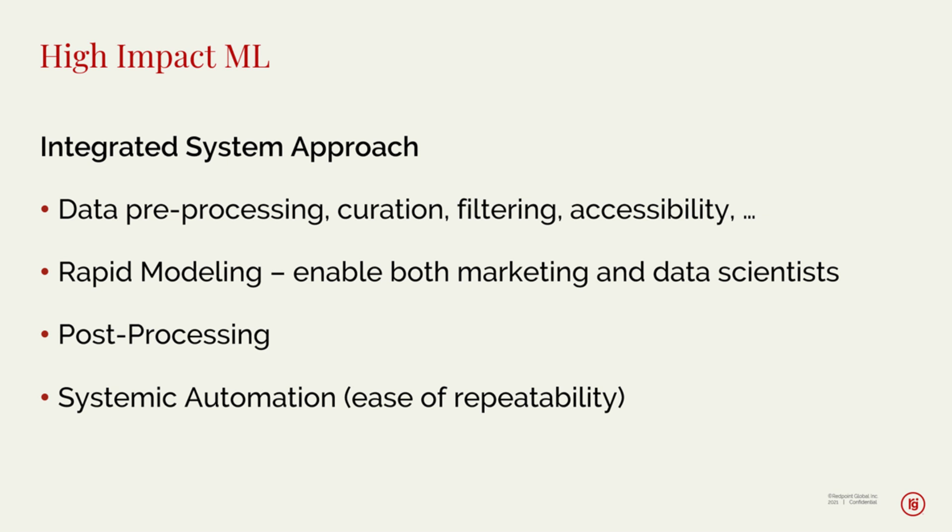We take an integrated system approach to machine learning. The first part is always data preprocessing — making sure data is available, getting rid of the noise, curation, joins — getting all your data ready for learning systems. You need to be able to rapidly model. We've seen clients say it takes six weeks for an IT or data science department to produce a model — that's just too late and not keeping up with the pace of life. We need rapid modeling for seasonal changes and everything else. Post-processing is also important: what do you do with the results? Machine learning gives you predictions, but how to act on them efficiently matters. Maybe you have a dozen recommendations — but filter out items the customer has already purchased so you present the most relevant options.